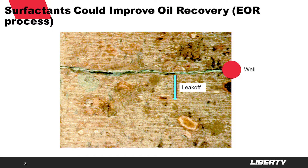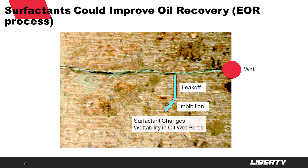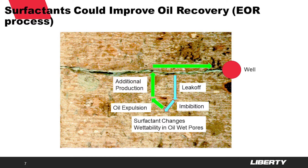So when we're fracking, the fluid leak-off into the rock from the fracturing fluid is going to invade into your formation and then potentially eventually imbibe into the rock. The good thing with that process could be that if the water with the surfactant imbibes into the rock, it could potentially change the wettability of the rock, transforming oil-wet pores into more water-wet pores, which results in expulsion of more oil and additional oil production back to the well. A particular surfactant could be used to make that work.